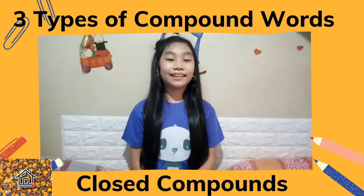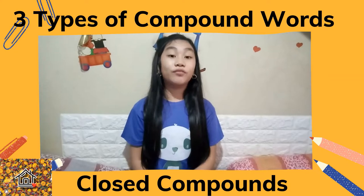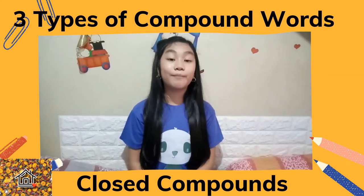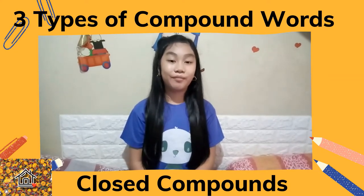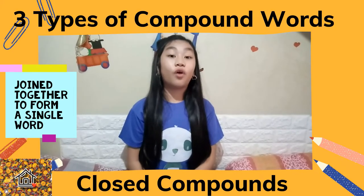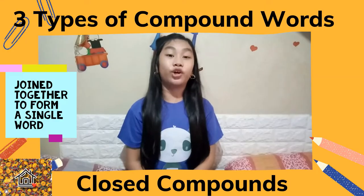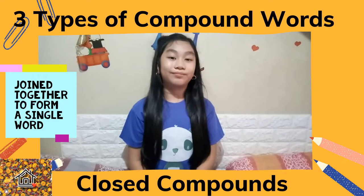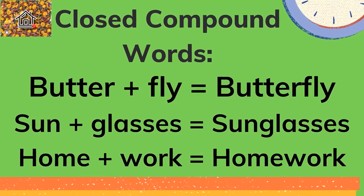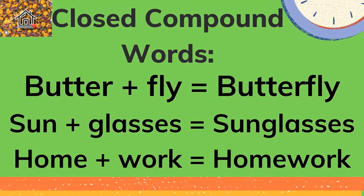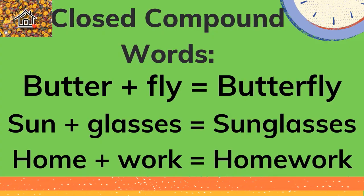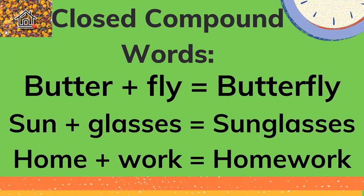The next type of compound words is the closed compound. These words are joined together to form a single word. Examples of closed compound words are butterfly, sunglasses, and homework.